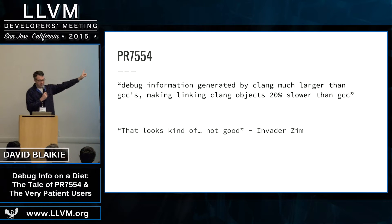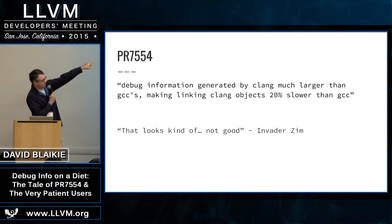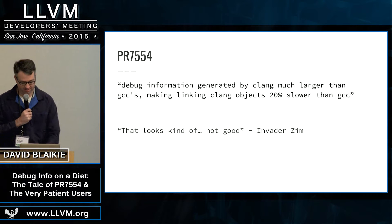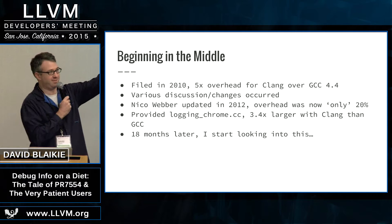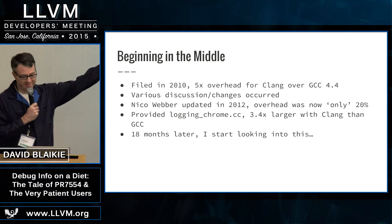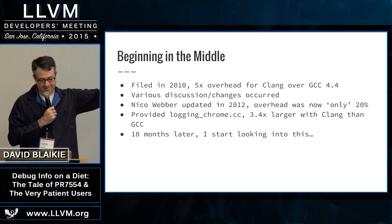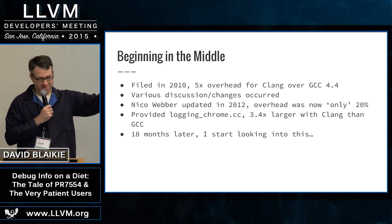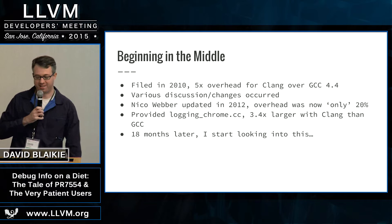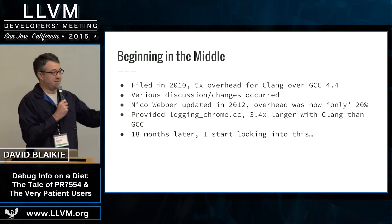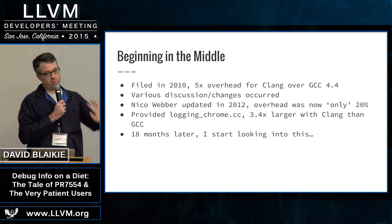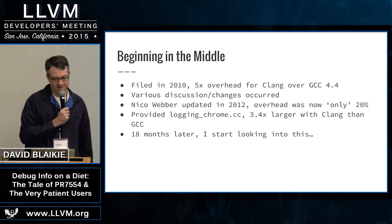It started with a bug. When it was first filed it said five times larger, but by 2012 Nico Webber updated the bug — it was only 20% at that point — and provided a lovely example where we were three and a half times larger.